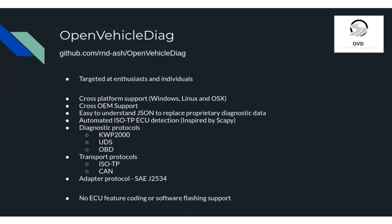An easy-to-understand JSON format will replace proprietary diagnostic data, basically dictating how the ECU should respond to a message and how you interpret and present that data to the user. The project plans to support all three major diagnostic protocols: Keyword Protocol, UDS, and OBD. For now we're only targeting ISOTP and CAN transport layers and only supporting the J2534 protocol. Things not in this project will be ECU feature coding and no software flashing support, partly due to liability reasons.